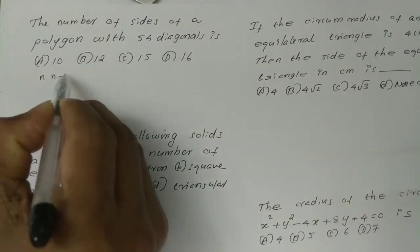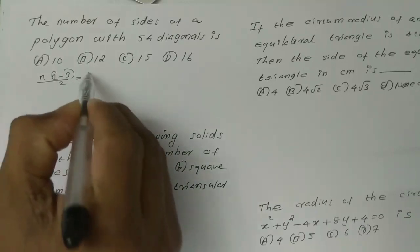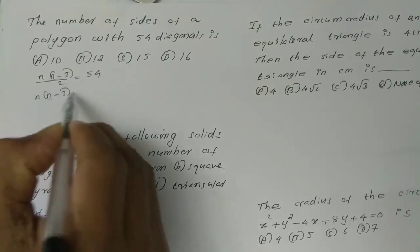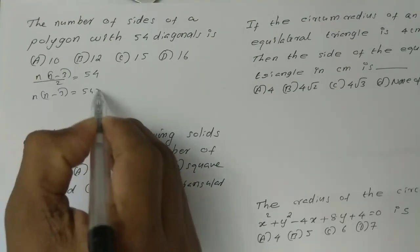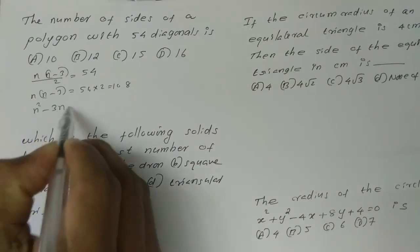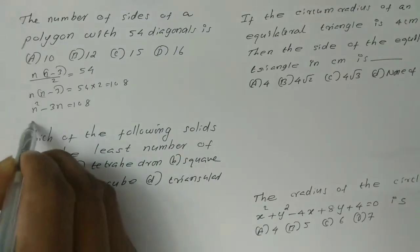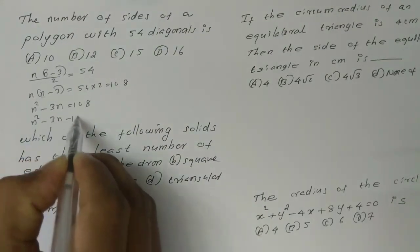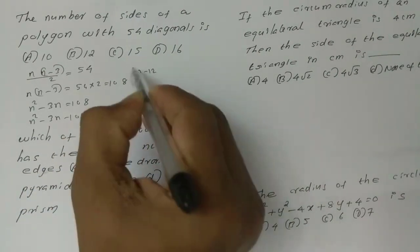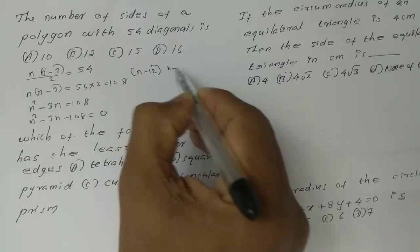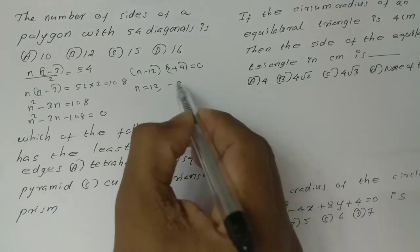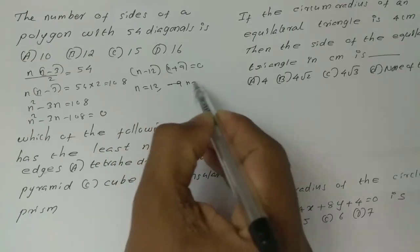Using the formula n(n-3)/2 = 54, we get n(n-3) = 108. So n² - 3n = 108, which gives n² - 3n - 108 = 0. Factoring: (n - 12)(n + 9) = 0, so n = 12 or n = -9.